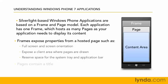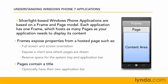Pages are where the bulk of the work is done. Pages contain a title and can have their own application bar. As you can see in the diagram on the right, at the top we have the frame, the frame contains one or more pages, and each page has a content area where content can be displayed.